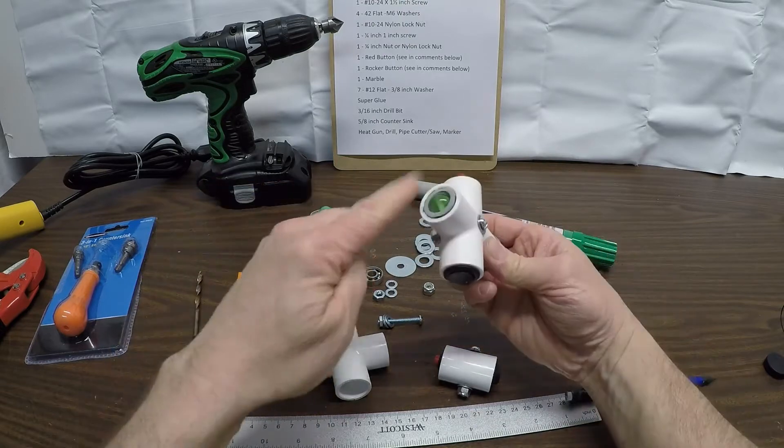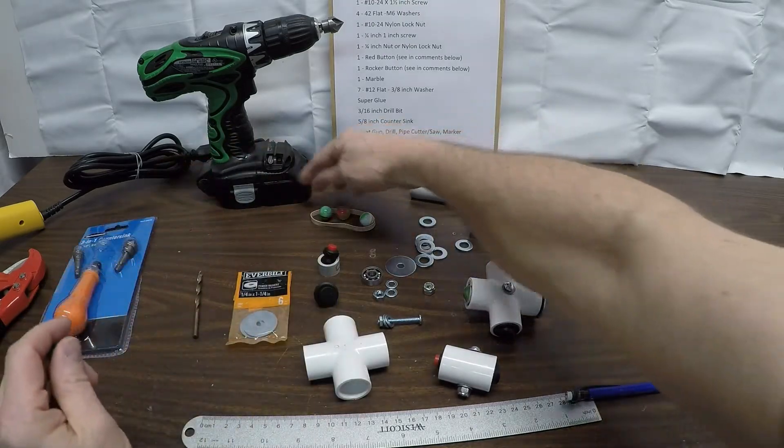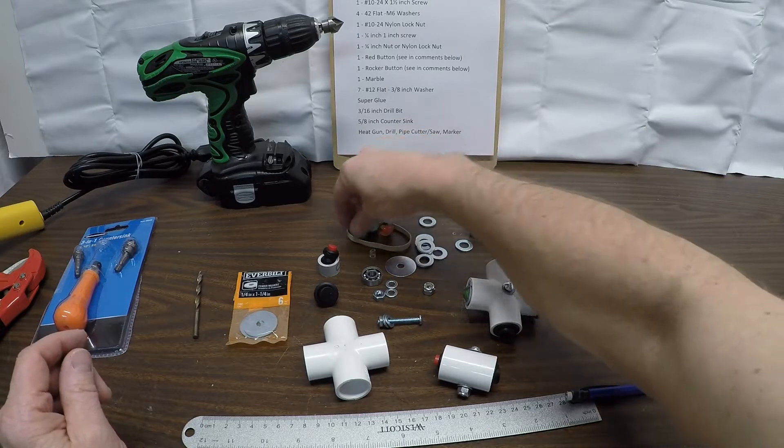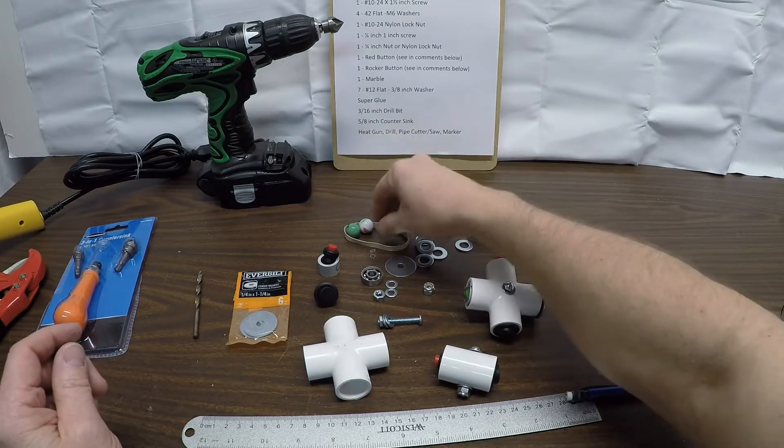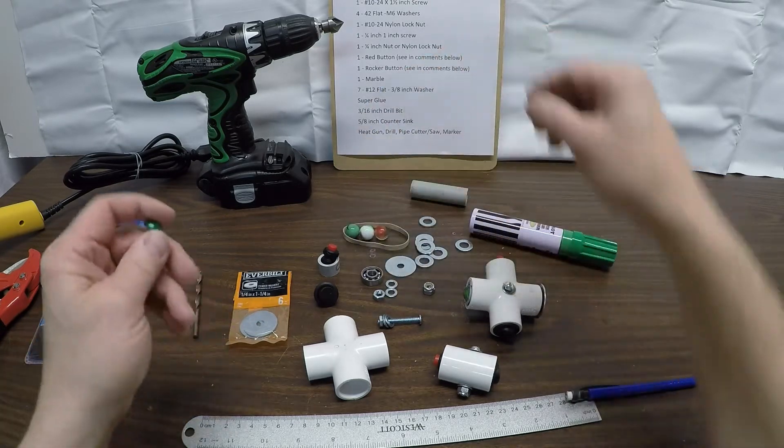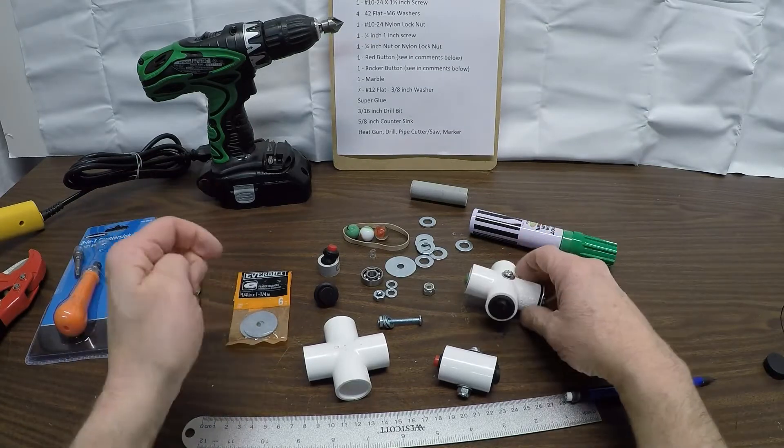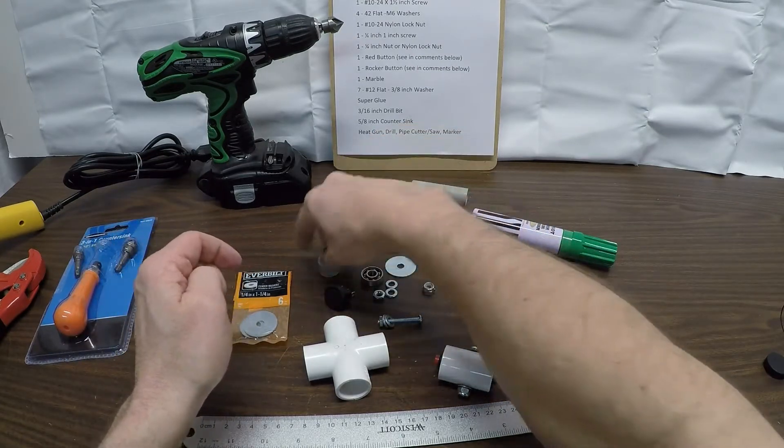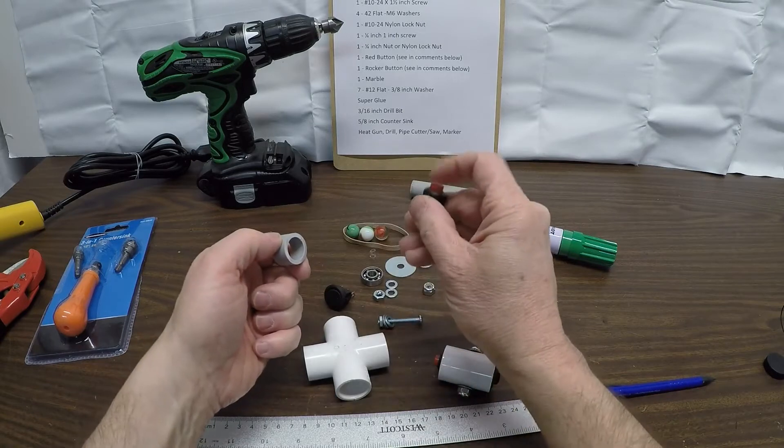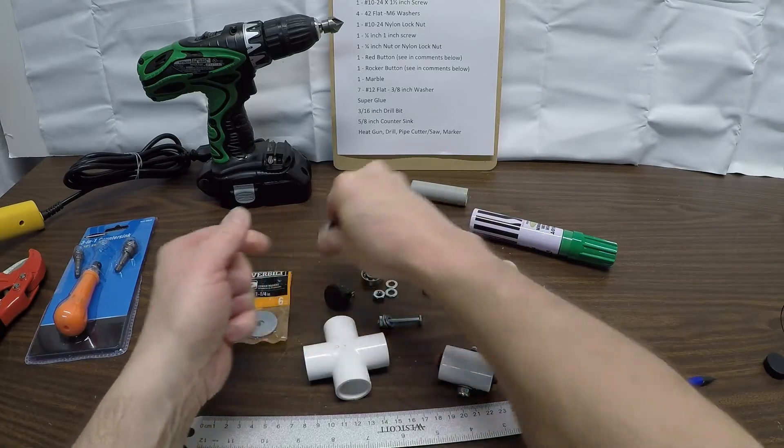Of course a marble, marble can be any kind of color that you want, probably the more color the better. A rocker switch. Here's the other piece of PVC tubing and the red button from the previous build.